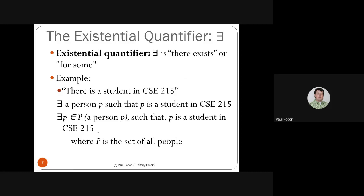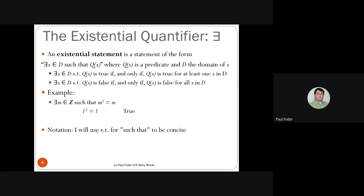The existential quantifier is placed in front of variables with the meaning that there exists at least one for which the predicate is true. An existential statement has the form: there exists X in domain D such that Q(X) is true. Such a formula is true if and only if Q(X) is true for at least one X in D.